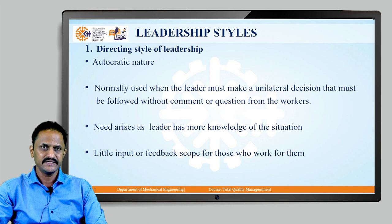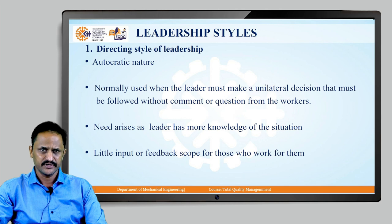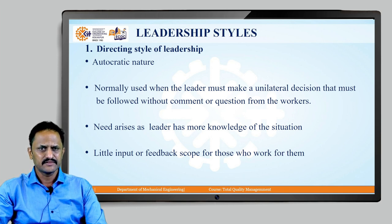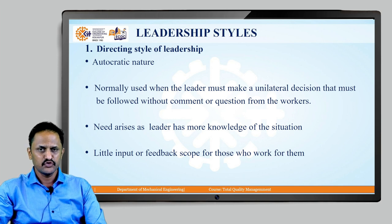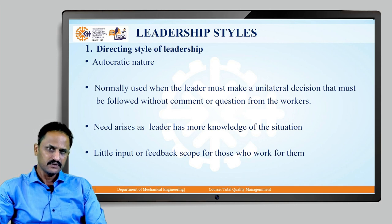The first one is the directing style of leadership. This leadership is of an autocratic nature, meaning all decisions are taken by the leader, and there is very little scope for employees working under that leader to provide feedback. This situation arises when the leader has more knowledge of the specific situation, and the leader takes all decisions unilaterally, based on which all the people will work.